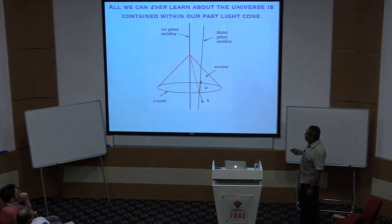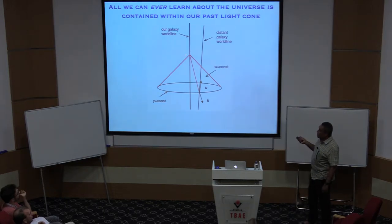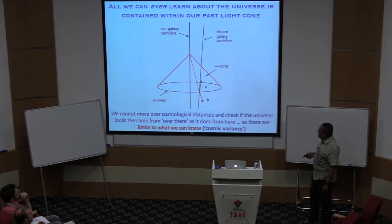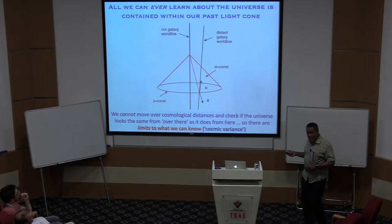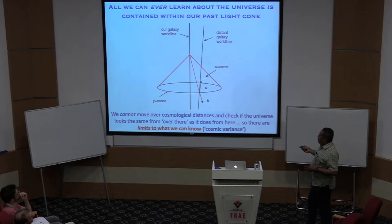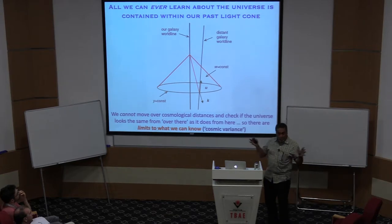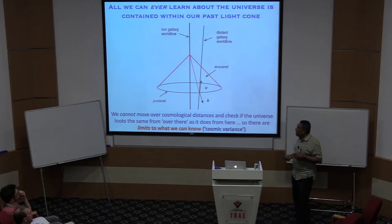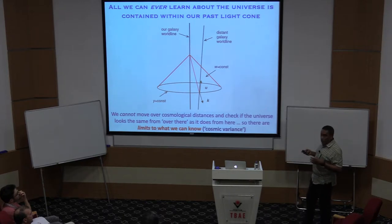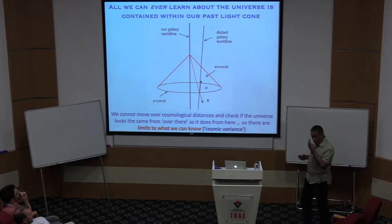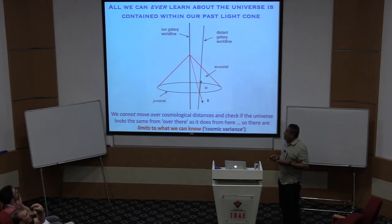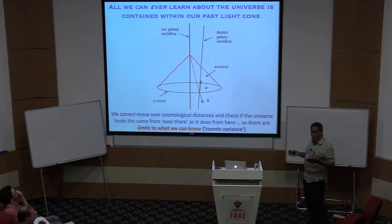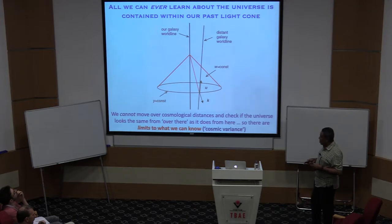There are limits to what we can know in cosmology, because everything that we know is contained within our light cone, and we cannot move somewhere else and construct another light cone to check that the universe looks the same from over there as from here. There is something called cosmic variance, which is the fact that the observer can be anywhere within this fluctuating density field, and therefore the view you get will depend on where we are. This does not affect structure on very small scales, which is more or less the same everywhere, but it does affect structure on large scales.